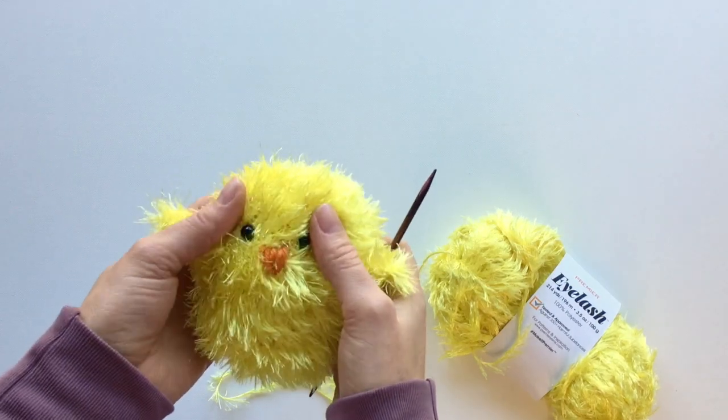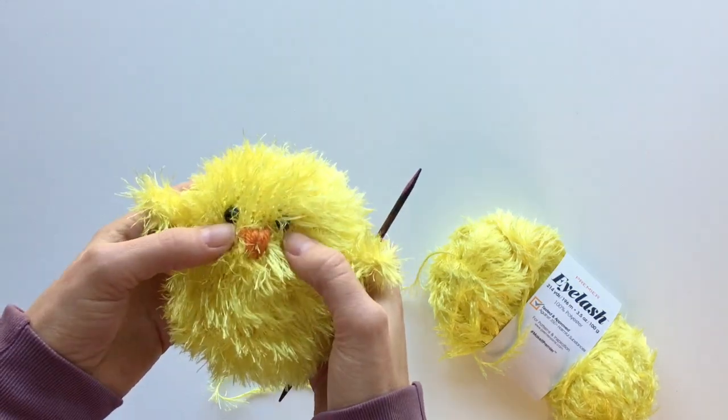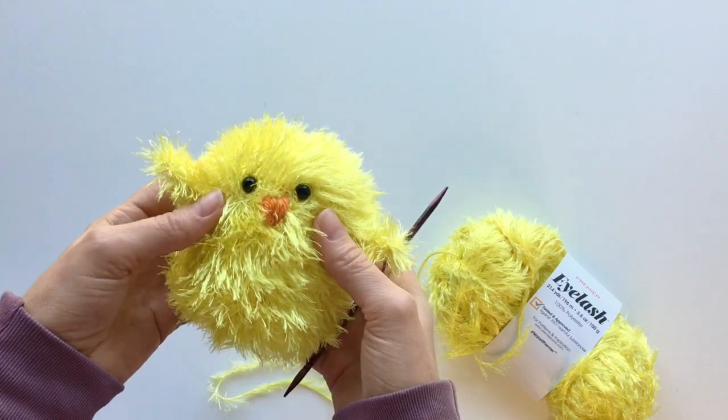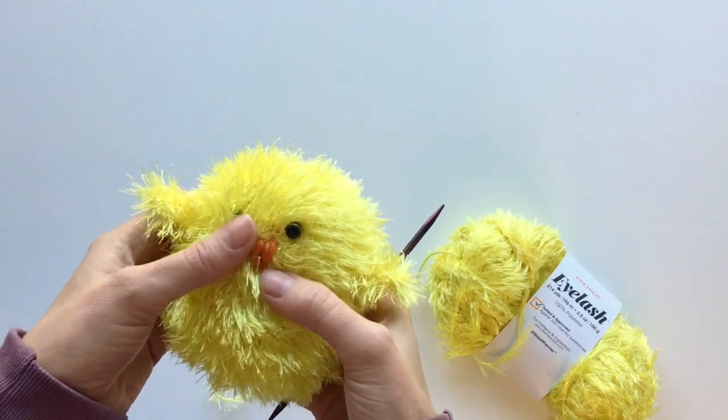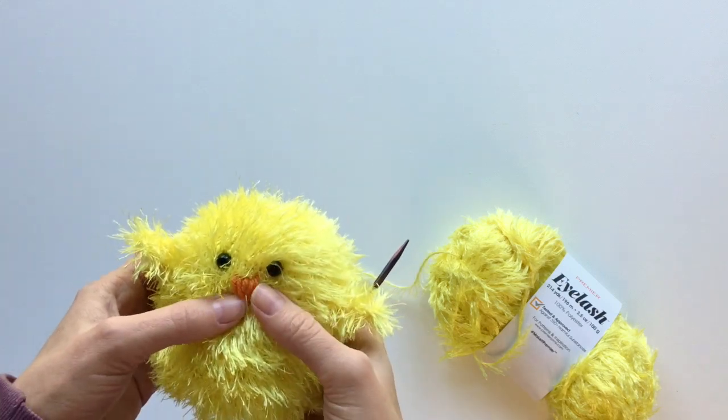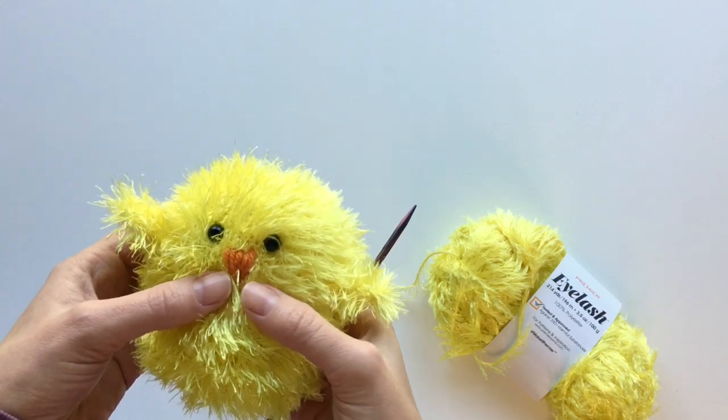We are also going to be using safety eyes, approximately 8 to 10 millimeters, and we're going to be using a smooth orange yarn. This is pumpkin in our Everyday Worsted yarn.